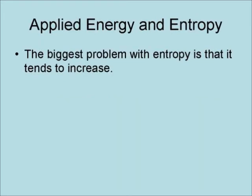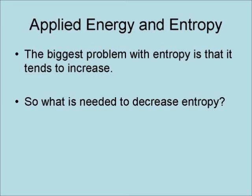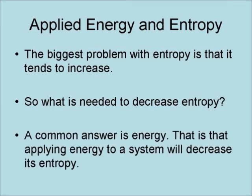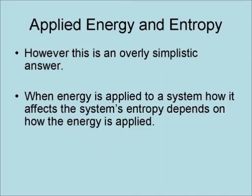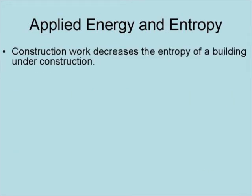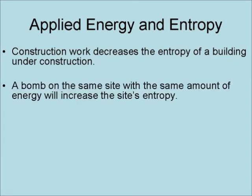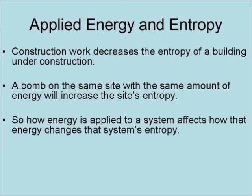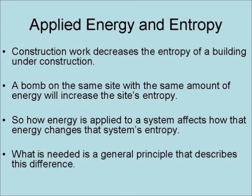The biggest problem with entropy is that it tends to increase. So what is needed to decrease entropy? A common answer is energy — that applying energy to a system will decrease its entropy. However, this is an overly simplistic answer, because when energy is applied to a system, how it affects the system's entropy depends upon how the energy is applied. The best example of this is the difference between construction work and a bomb. Construction work decreases the entropy of a building under construction, while a bomb on the same site with the same amount of energy will increase the site's entropy. So how energy is applied to a system affects how that energy changes the system's entropy. What is needed is a general principle that describes this difference.